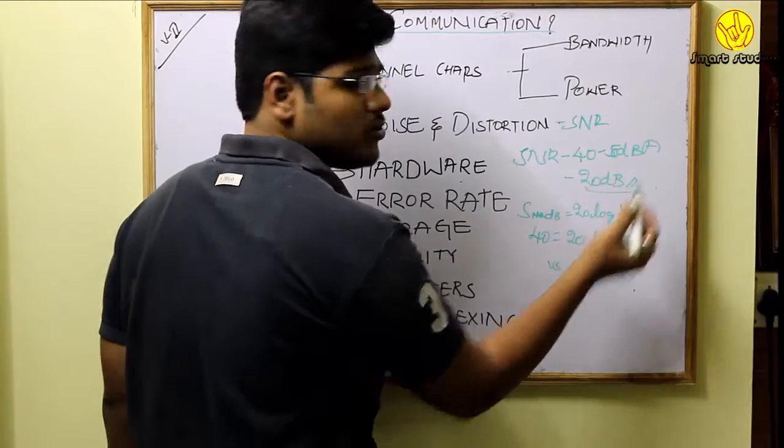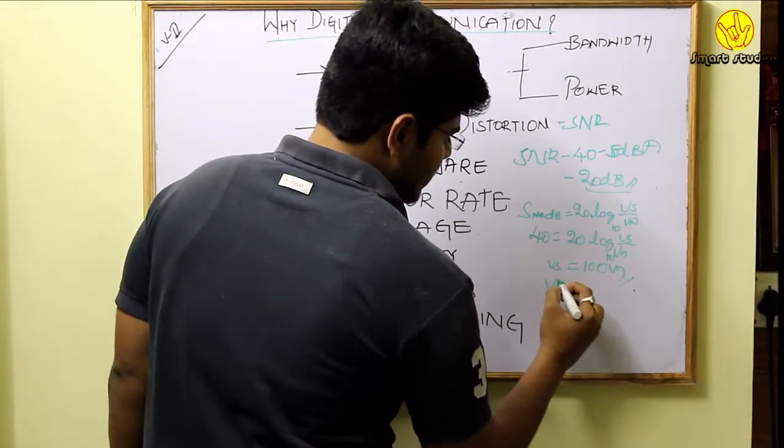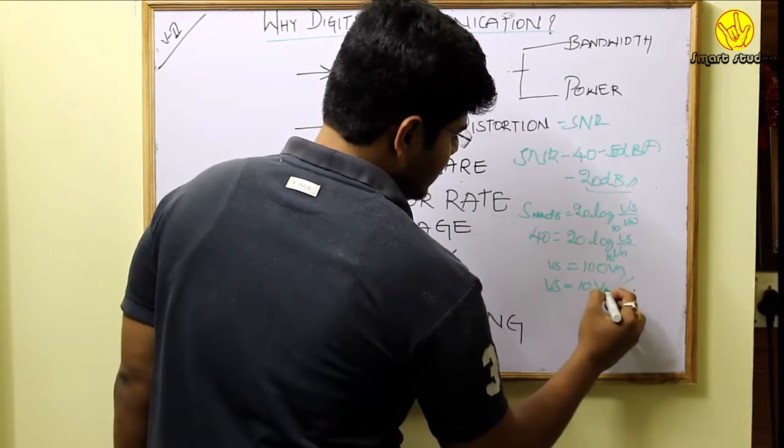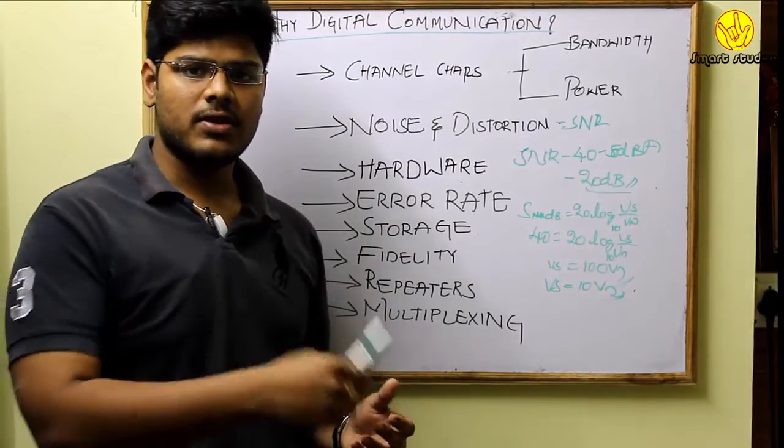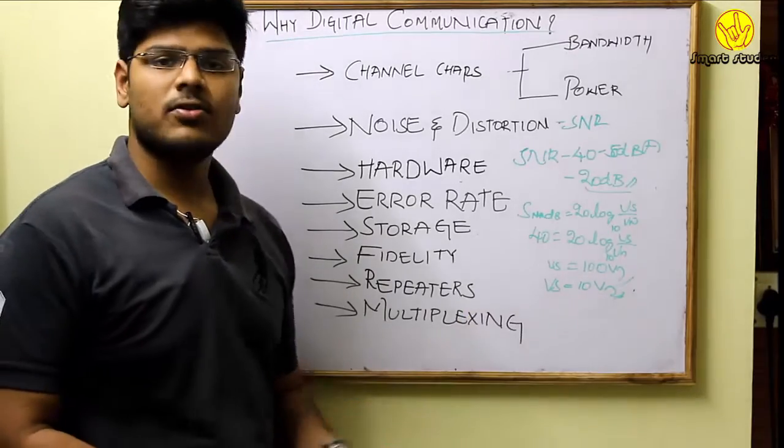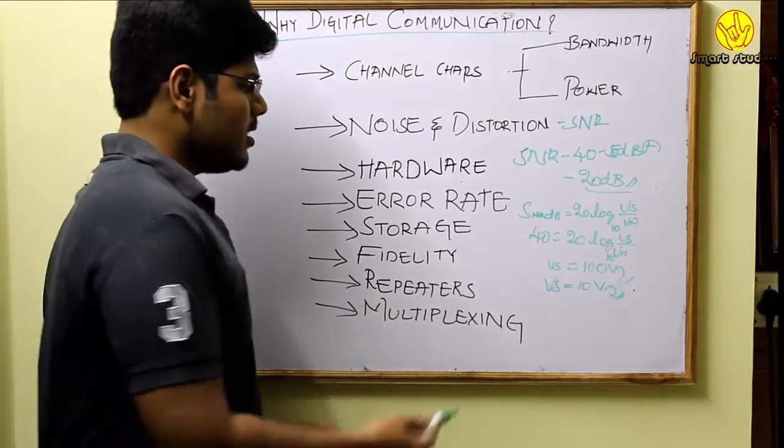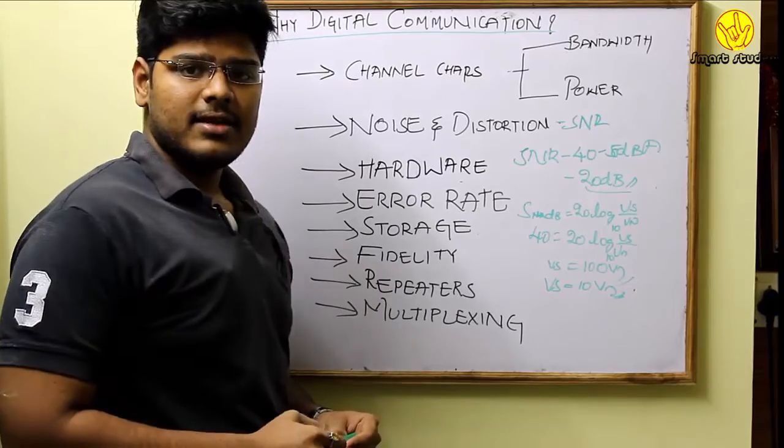Whereas when it comes to the digital signal, it is only 20 dB. That is, Vs is 10 times Vn. It is enough if the voltage of the received signal is 10 times the voltage of the noise. So here, in this way, the digital signal has an advantage when compared to the analog signal.